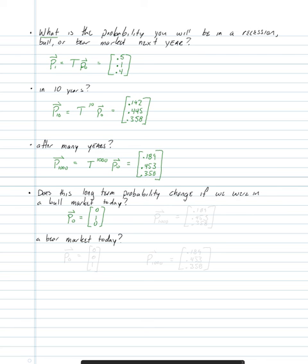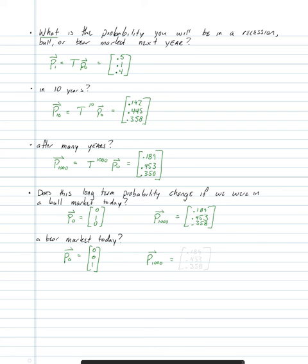Finally, if we start in a bear market today, our initial probability vector equals [0, 0, 1]. Using this initial probability vector to find p of 1,000, we again come to the same answer. Regardless of the starting state, the long-term p of 1,000 equals [0.189, 0.453, 0.358] — the same result confirming that the long-term distribution does not depend on the initial condition.